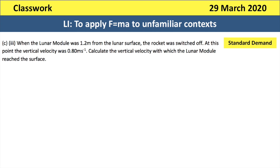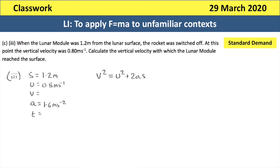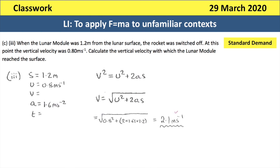The final part: when the lunar module was 1.2 metres from the lunar surface, the rocket was switched off. At this point the vertical velocity was 0.8 metres per second. Calculate the vertical velocity at which the lunar module reached the surface. This is a SUVAT question: S equals 1.2 metres, U equals 0.8 metres per second, and acceleration equals the moon's gravitational field strength of 1.61 metres per second squared. Using V squared equals U squared plus 2AS and taking the square root, the final velocity comes out as approximately 2.1 metres per second.